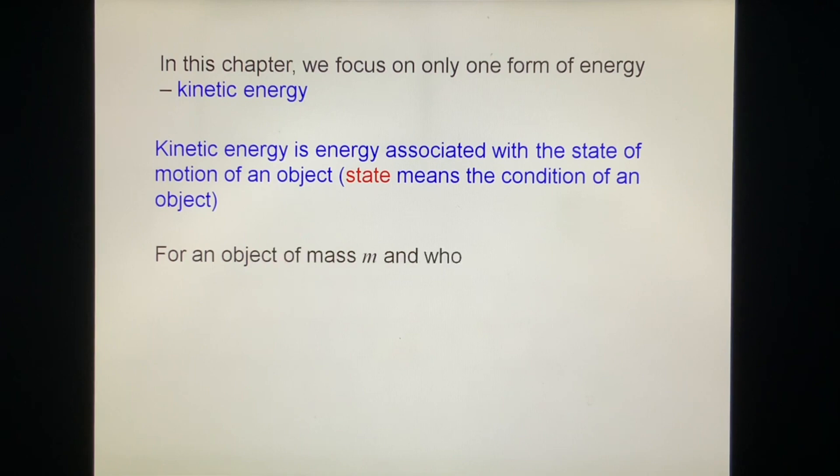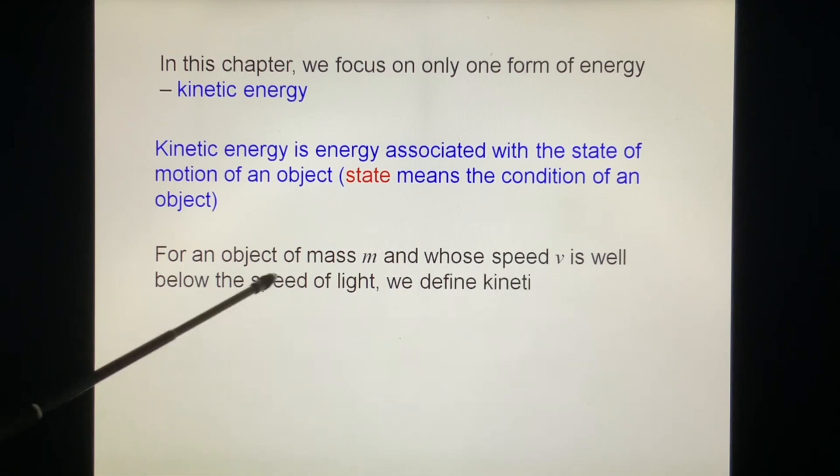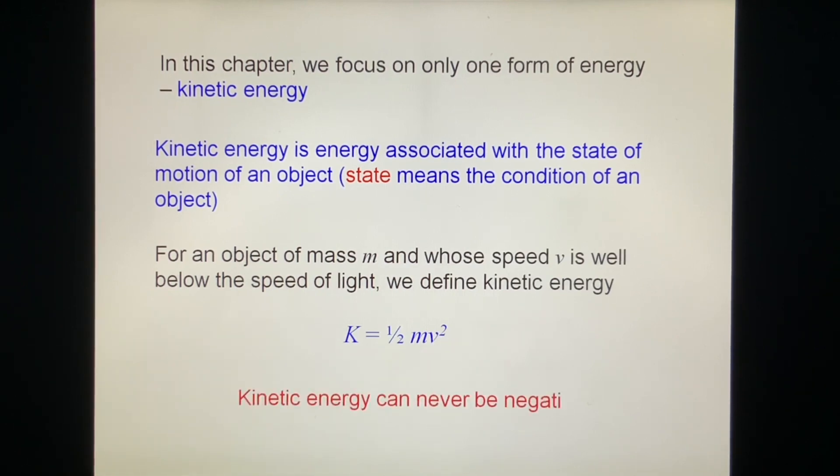For an object of mass m and speed v well below the speed of light, we define the kinetic energy as K equals half mv squared. This energy is proportional to v squared, so it can never be negative, always positive. Kinetic energy can never be negative.